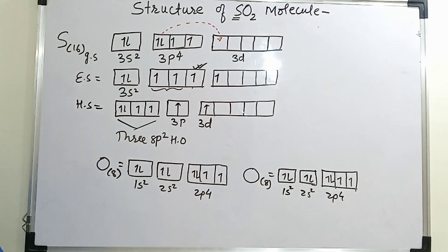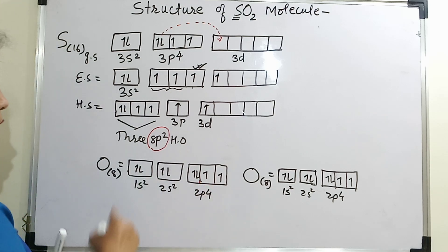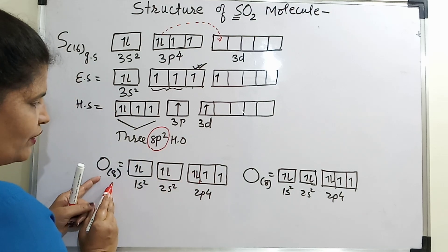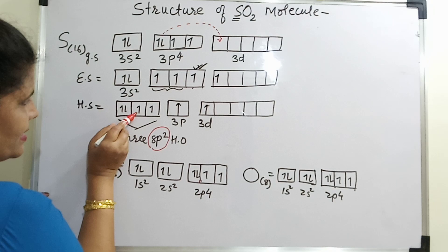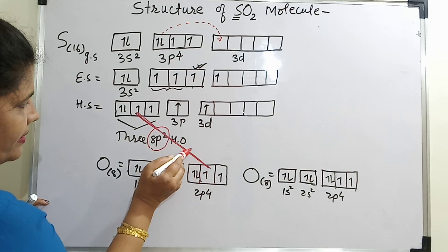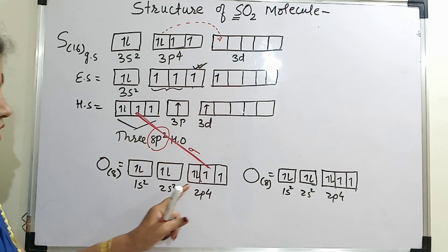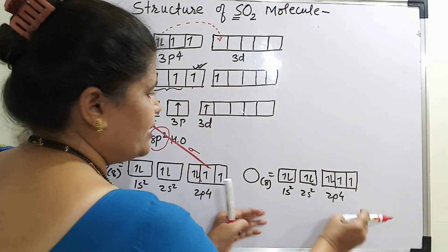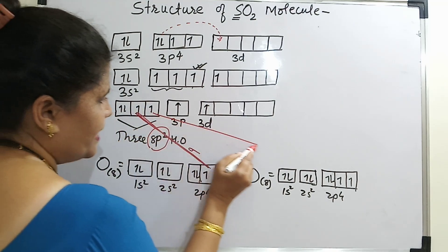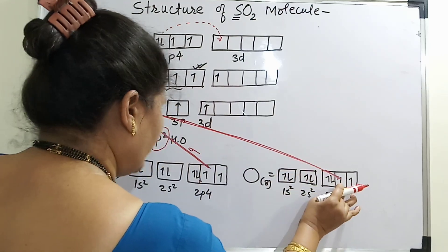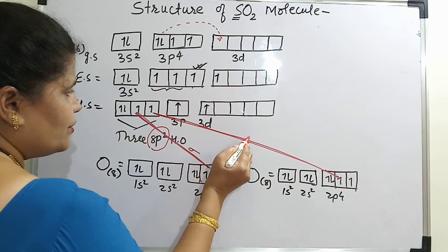Let us see what type of hybridization oxygen will undergo — it is sp2. Now you can focus on how I am overlapping the orbitals. The first type of bond which will be formed — considering the first oxygen — the overlap will be between this unpaired electron and this electron. This is your sigma bond. So the first bond which is formed is a sigma bond. As the first sigma bond formation is over, I will move on to this oxygen, so this will be your second sigma bond.